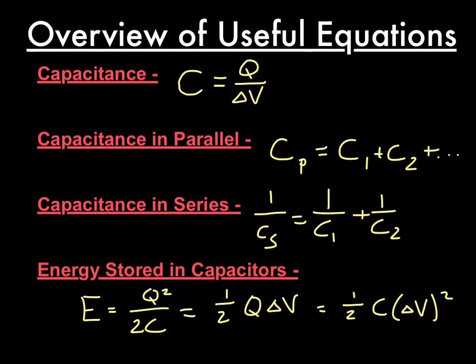Here are the formulas you're going to be using. Capacitance equals charge over potential difference. In parallel, capacitances add — because potential difference is the same in parallel. In series, 1 over the total capacitance equals 1 over C1 plus 1 over C2, plus however many you have. An important step: remember you have to invert that result afterwards. You also have a variety of energy formulas depending on whether you have charge and capacitance, charge and voltage, or capacitance and change in voltage.